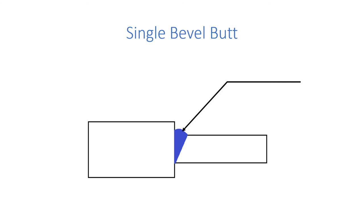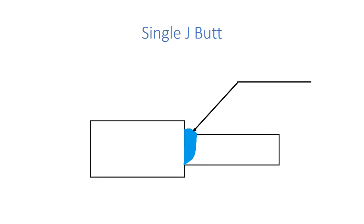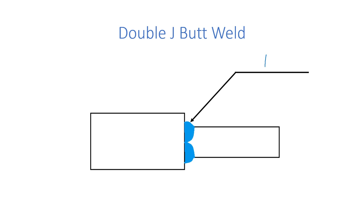Next is single bevel butt weld. It is on the side of the arrow, so we have a bevel symbol like this — this is the single bevel butt weld. Then double bevel butt weld — this will be shown like this. Then a single J butt joint — it is on the side of the arrow, so the symbol will be like this. This is the J butt weld. Next is J butt weld shown like this.